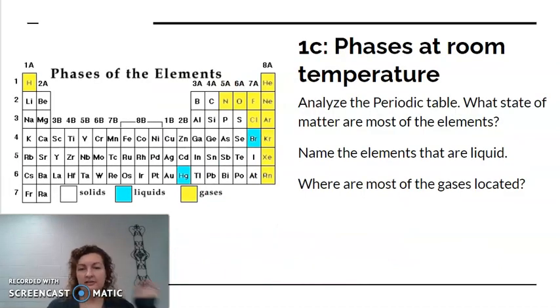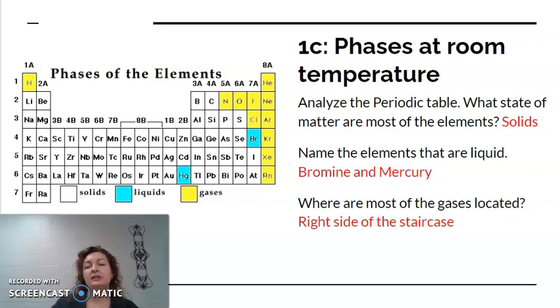So let's just jump right into phases at room temperature. This is a periodic table and it's color coded. You can tell the white is solids, blue liquids, and yellow gases. So we're supposed to answer these questions based off of these facts. Analyze the periodic table. What state of matter are most of the elements? Clearly they're mostly white, which are solids, right?